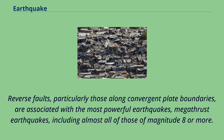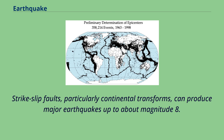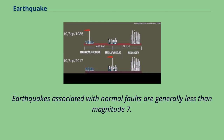Reverse faults, particularly those along convergent plate boundaries, are associated with the most powerful earthquakes — megathrust earthquakes — including almost all of those of magnitude 8 or more. Megathrust earthquakes are responsible for about 90% of the total seismic moment released worldwide. Strike-slip faults, particularly continental transforms, can produce major earthquakes up to about magnitude 8. Earthquakes associated with normal faults are generally less than magnitude 7.